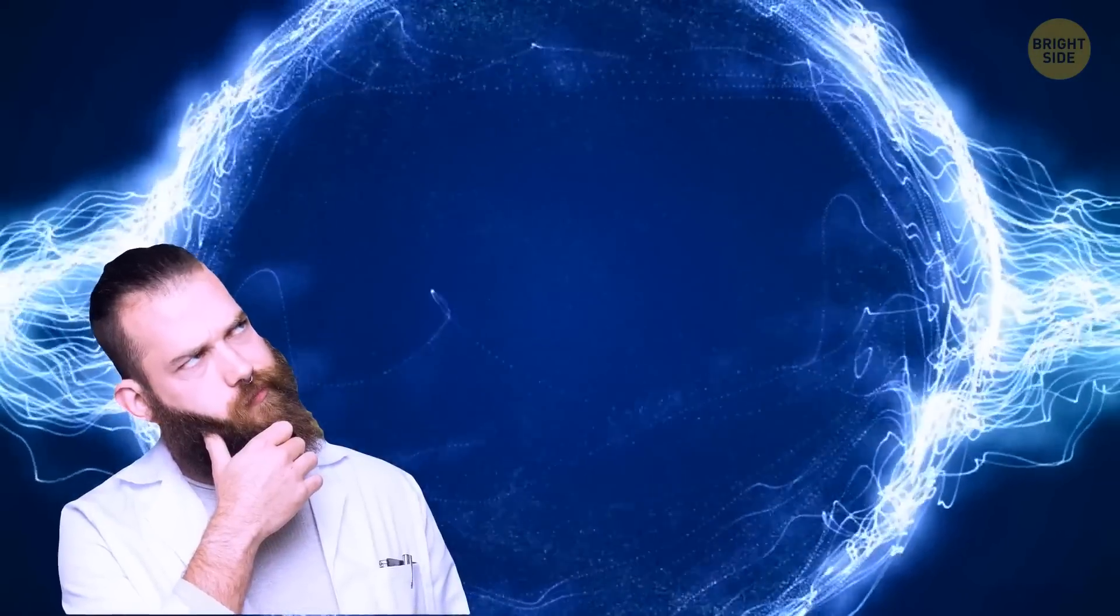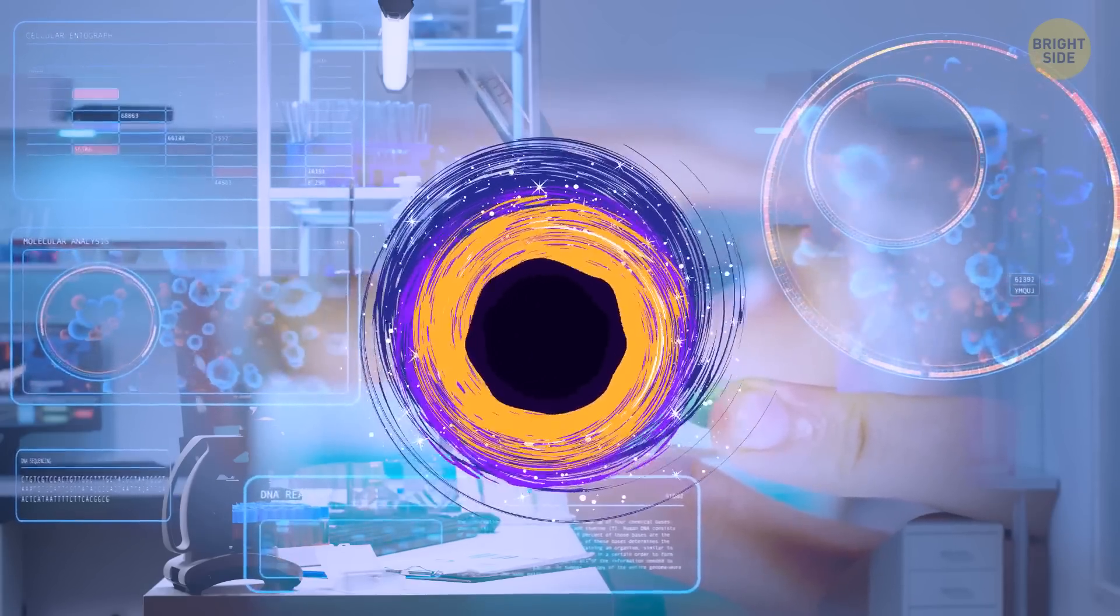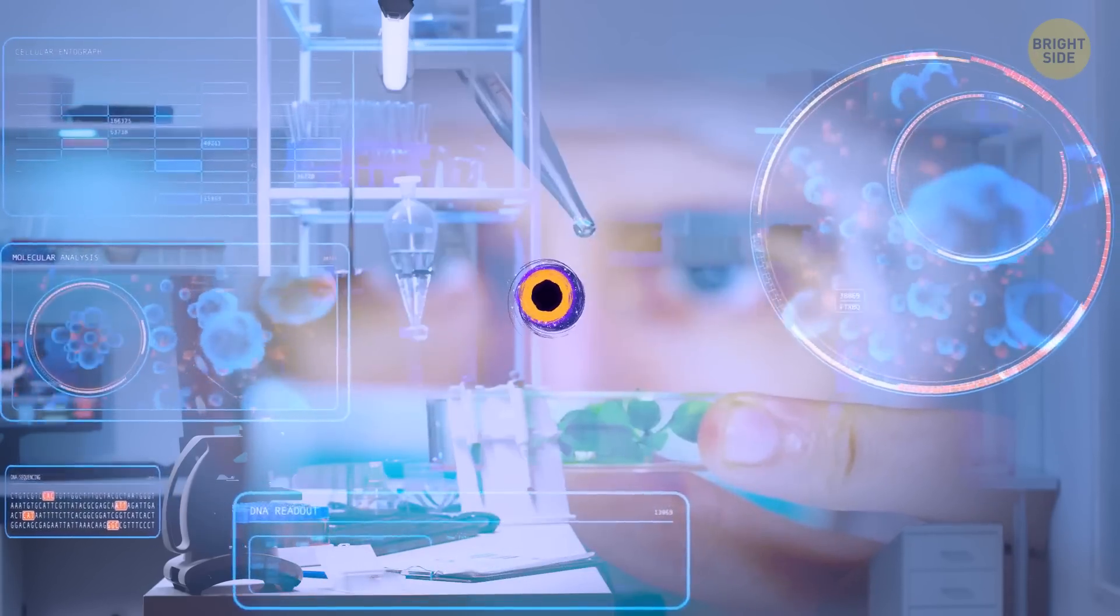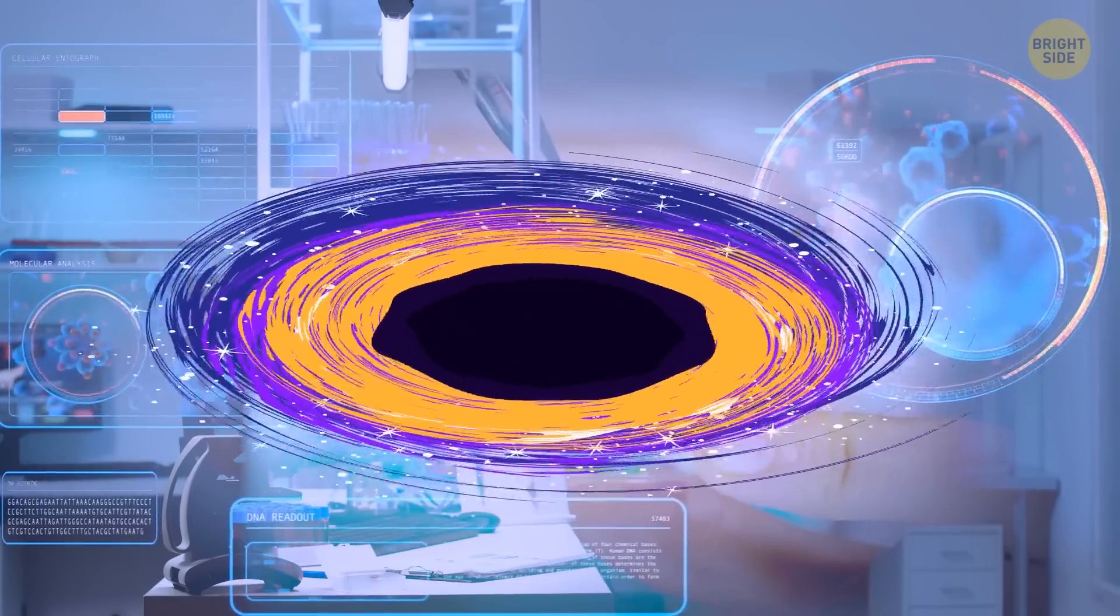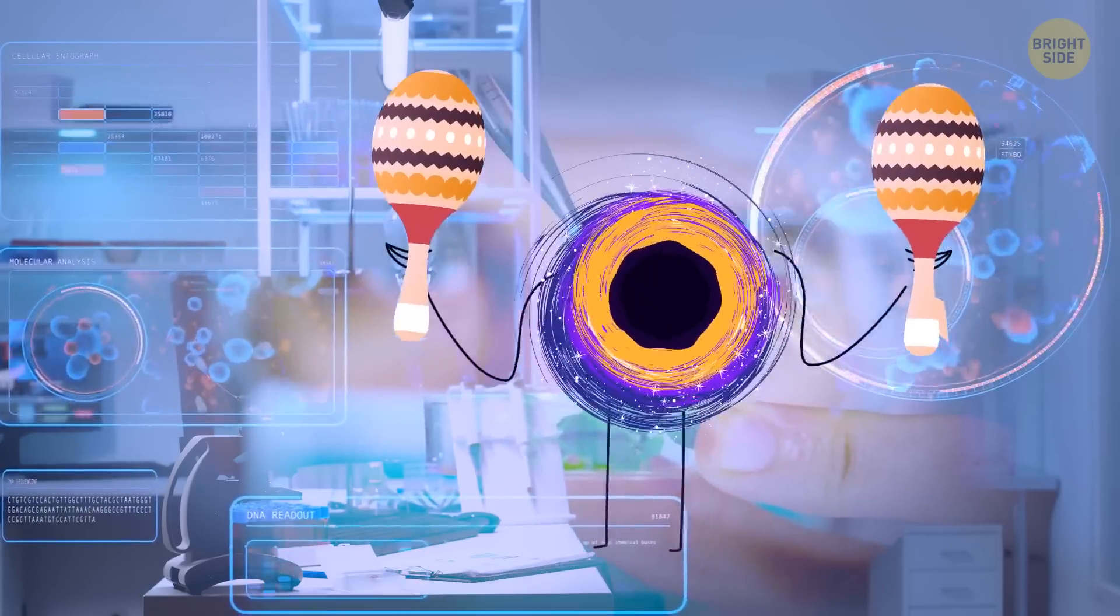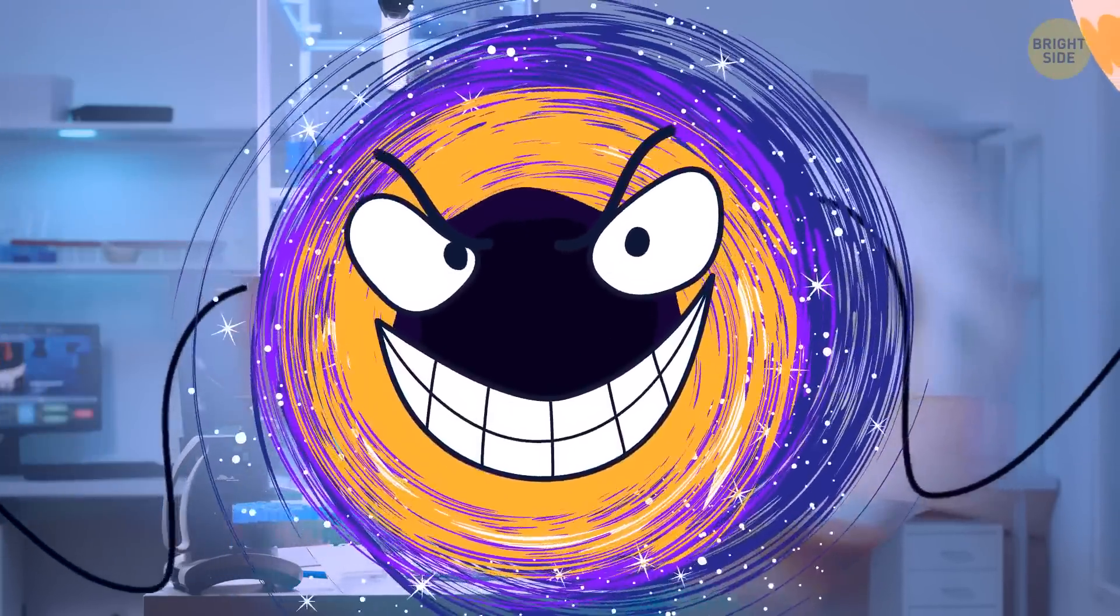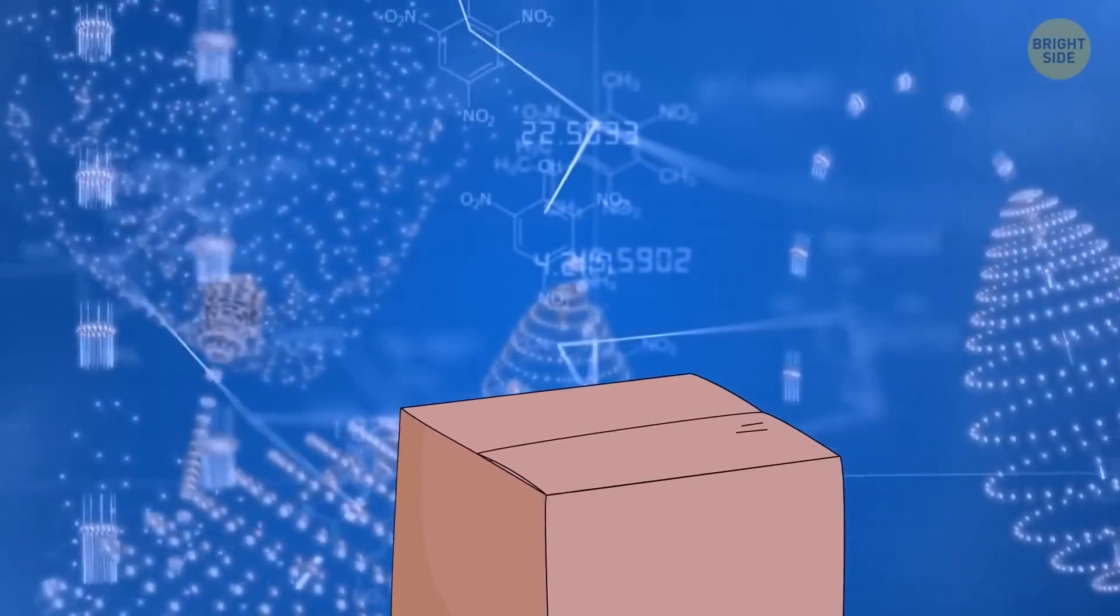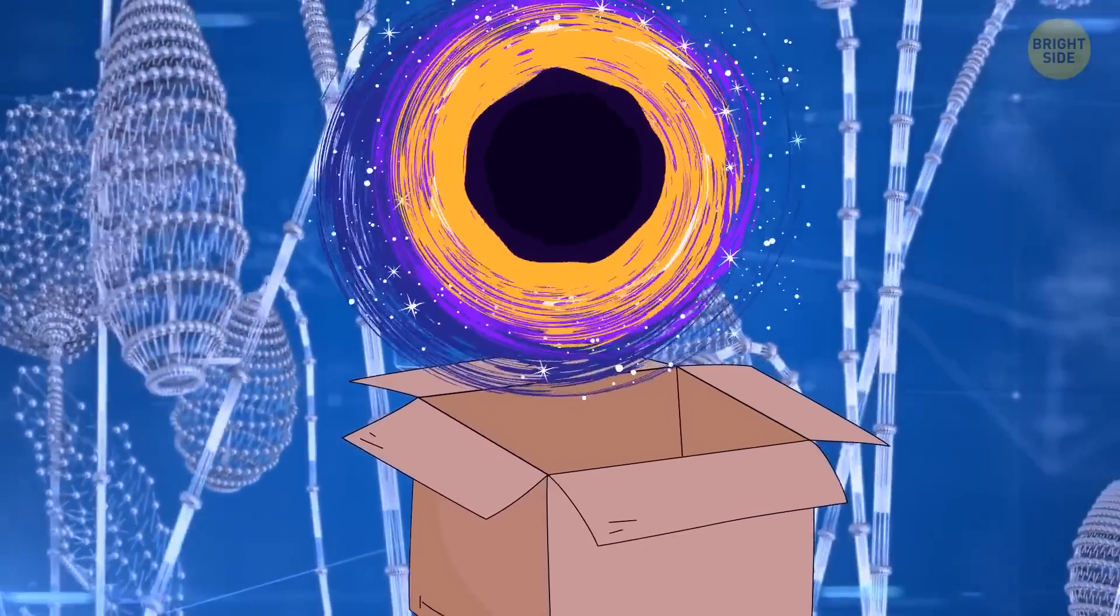Scientists have discovered that black holes have very unusual quantum properties. They found out that each black hole can be both large and small, light and heavy, no longer living and alive. Well, maybe except for the last part. Let's hope that there aren't actually any living black holes. But the main point of the discovery is that each black hole can be in all possible states at the same time.